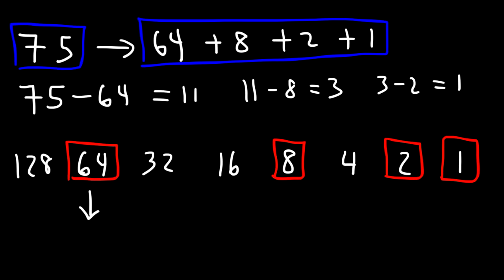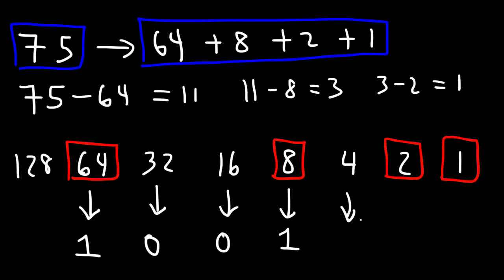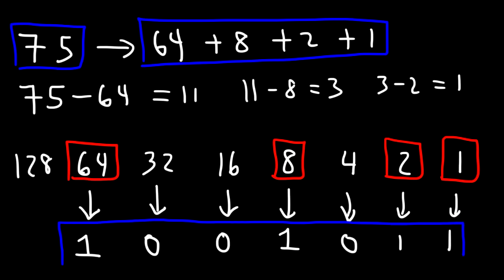Because we have a 64, we're going to put a 1. We don't have a 32, so let's write a 0. We don't have a 16. We do have an 8, so let's put a 1. We do not have a 4, so let's put a 0. But we do have a 2 and a 1. So 75 is equal to 1001011. And so that's one simple way in which you can convert a decimal number into a binary number.